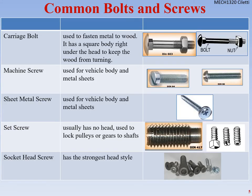You'll need to recognize these fastener types on your homework and tests. A carriage bolt is used to fasten metal to wood and is uniquely defined by the square section under the head that keeps it from turning. Machine screws have very fine threads and are used for vehicle bodies and metal sheets. Sheet metal screws are pointed and drive their own hole, whereas machine screws require a pre-made hole.